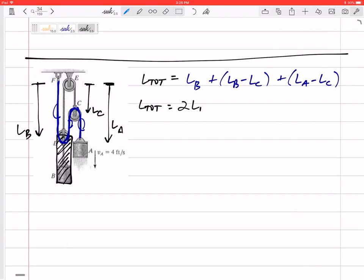Alright, so this would be 2LB minus 2LC plus LA. Alright, so I could come in here and I could plug this in as positive 4, but I'd still have too many unknowns. I'm sorry, I haven't taken the derivative yet.